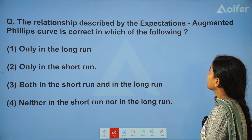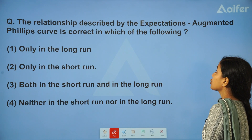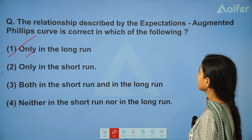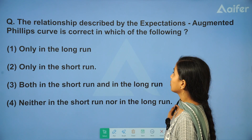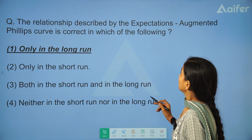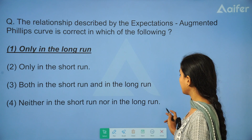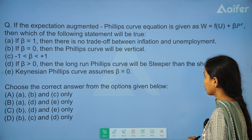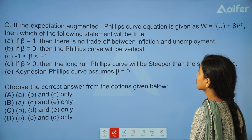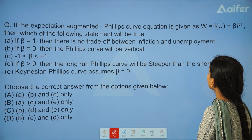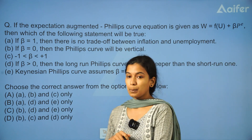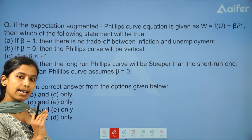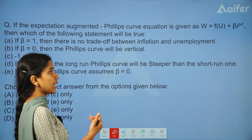The relationship described by the expectation-augmented Phillips Curve is correct only in the long run. Next question — this is from the June 2018 exam. If the expectation-augmented Phillips Curve equation is given as W = F(U) + βPE, where PE is expected inflation, beta is the elasticity or sensitivity of wages to inflation, W is nominal wages, and U is unemployment.